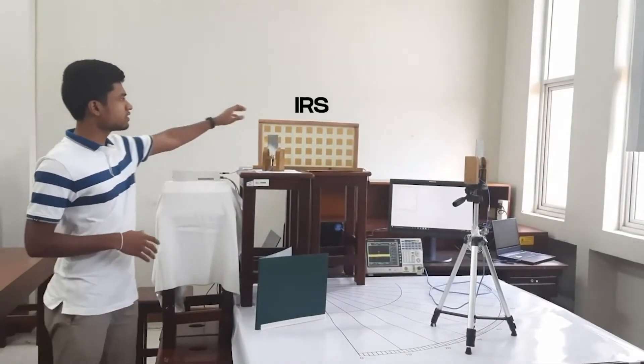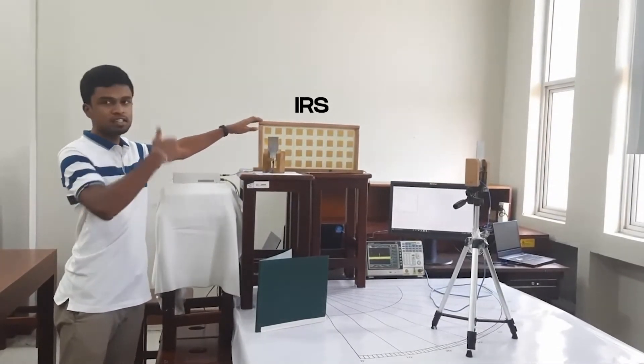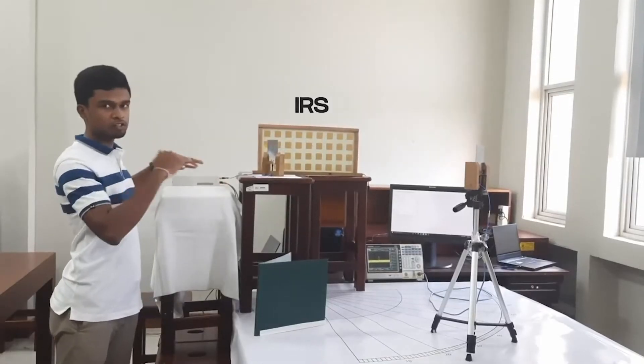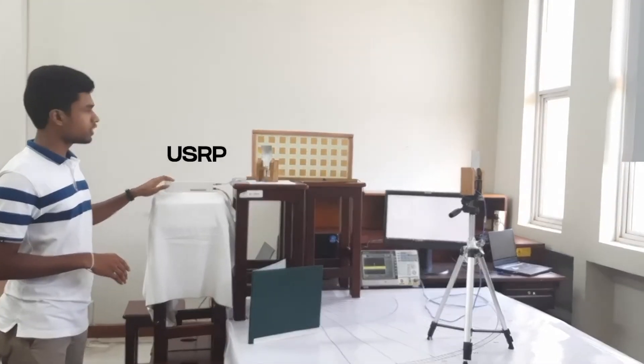This is the final setup of our project. You can see this is the IRS we developed. It has nine columns and four rows. We use two patch antennas for transmitter and receiver.